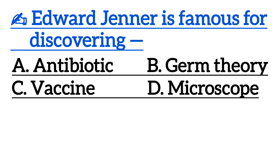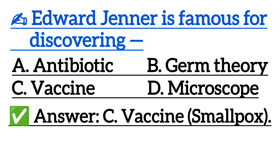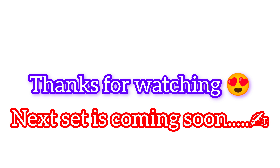Next one is: Edward Jenner is famous for discovering — Option A: Antibiotic, Option B: Germ Theory, Option C: Vaccine, Option D: Microscope. Correct answer is Option C: Vaccine.